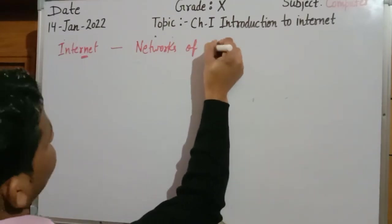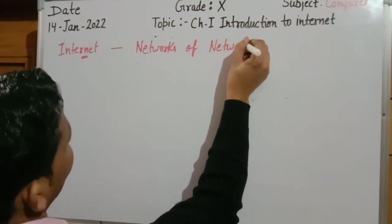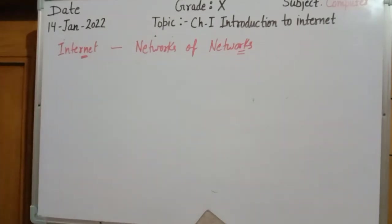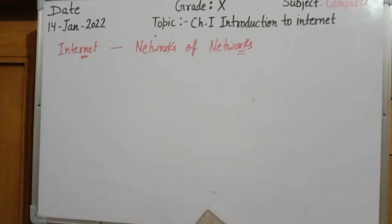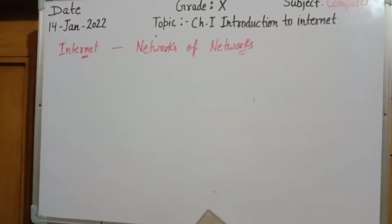The internet means networks of networks. When a number of networks are connected with each other, this is known as the internet. As per the history of internet, the internet first came to market and was established in 1969.